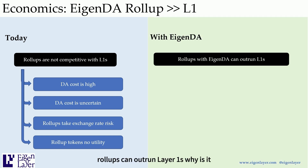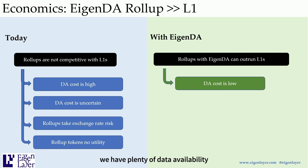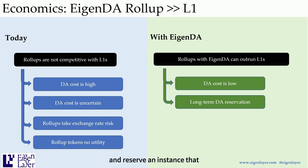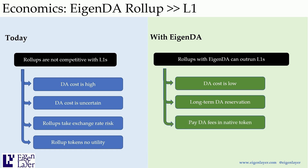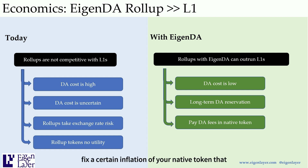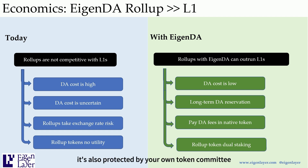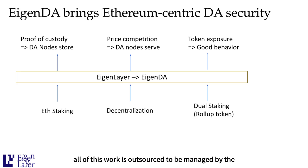With EigenDA, rollups can outrun layer 1s. First, data availability cost is low — we have plentiful data availability built on a hyperscale system. Second, EigenDA enables long-term reservation: just like you'd go to AWS and reserve an instance only you use, you're reserving a lane of data availability just for yourself. Even when doing this reservation, you can pay in ETH or in your own native token, fixing a certain inflation of your native token to run data availability. Finally, rollup tokens can be used in EigenDA for dual staking, meaning the data availability system is protected not only by ETH stakers but also by your own token committee.